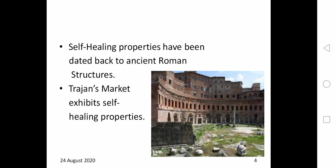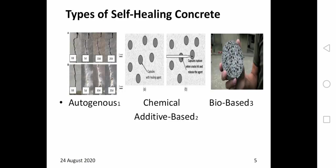Self-healing properties have been dated back to Roman times, such as Trajan's Market in Rome, where the structure has remained standing for roughly 1,900 years. There are three types of self-healing concrete that will be discussed in this presentation.